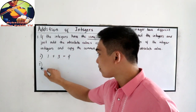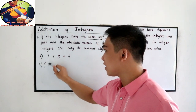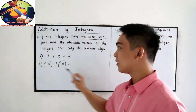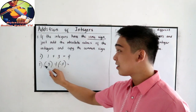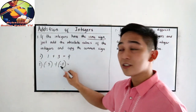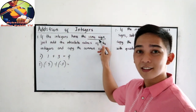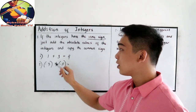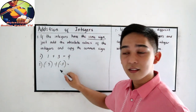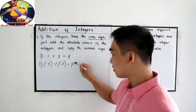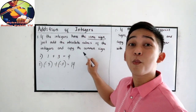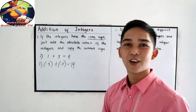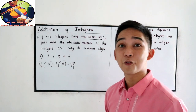Number two: negative three plus negative eleven. The signs are negative and negative, so they have the same sign. By our rule, just add the numbers: three plus eleven is fourteen. Then copy their common sign, which is negative. So the answer is negative fourteen.